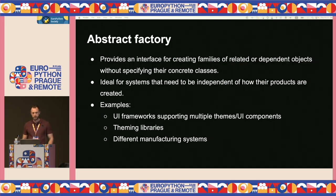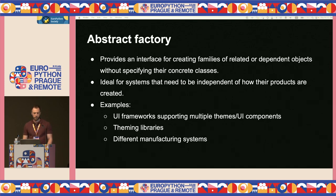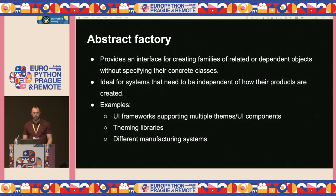The second creational pattern is Abstract Factory. It provides an interface for creating families of related or dependent objects without specifying their concrete classes. It's ideal for systems that need to be independent of how their products are created. Examples include UI frameworks supporting multiple themes, UI component libraries, and manufacturing systems.